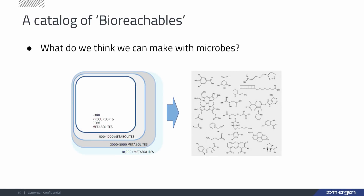What we've done is create a catalog of what we call 'bioreachables' — these are the molecules we know we can make through our methodology, using the microbes we've been working with through our high-throughput screening, automation framework, and machine learning.